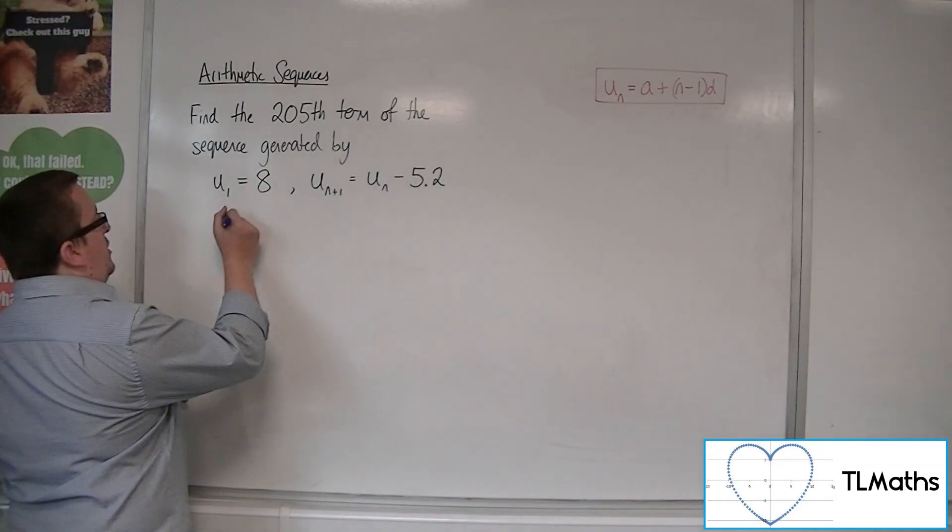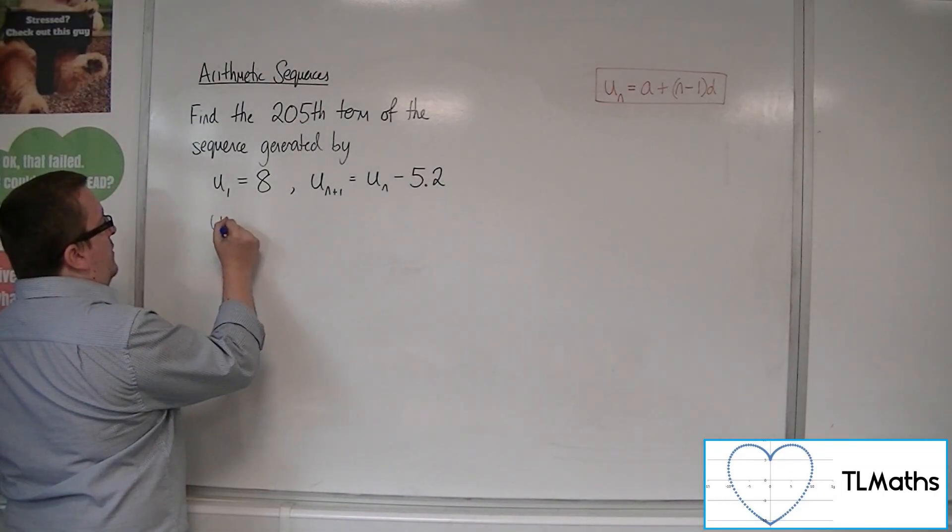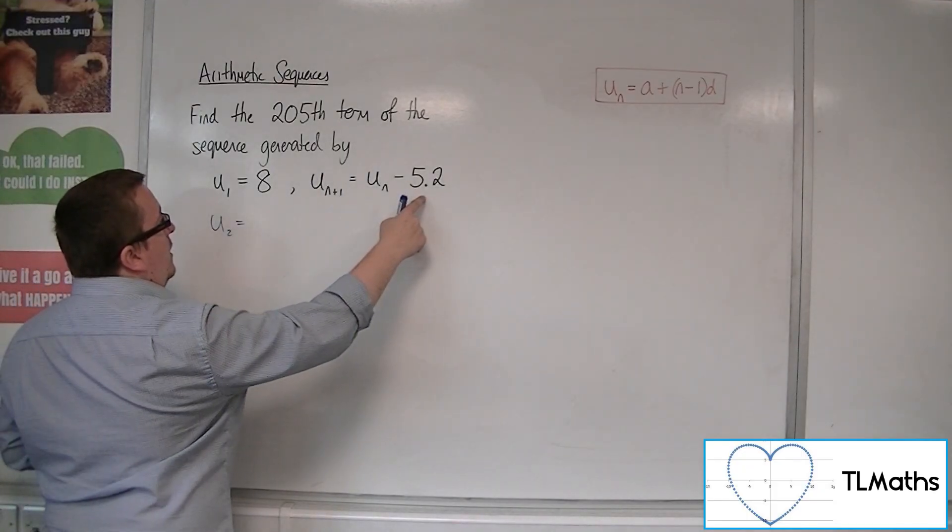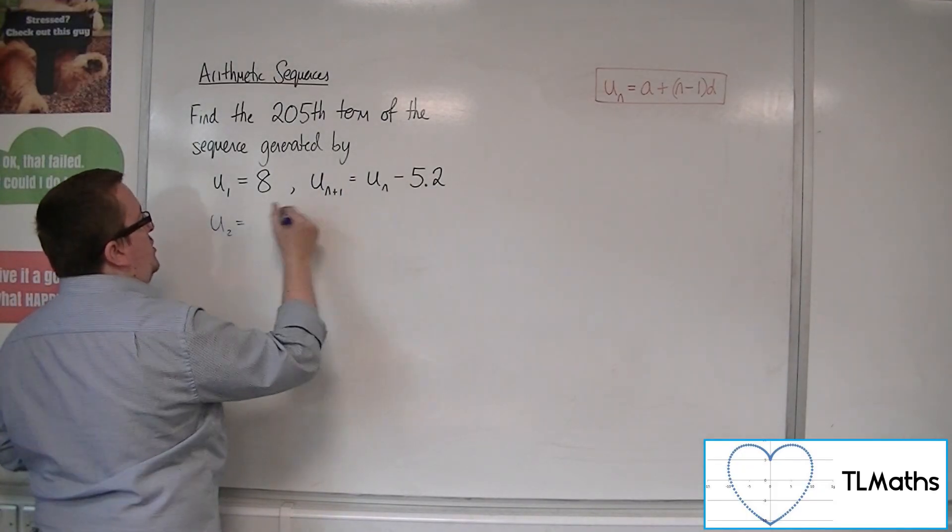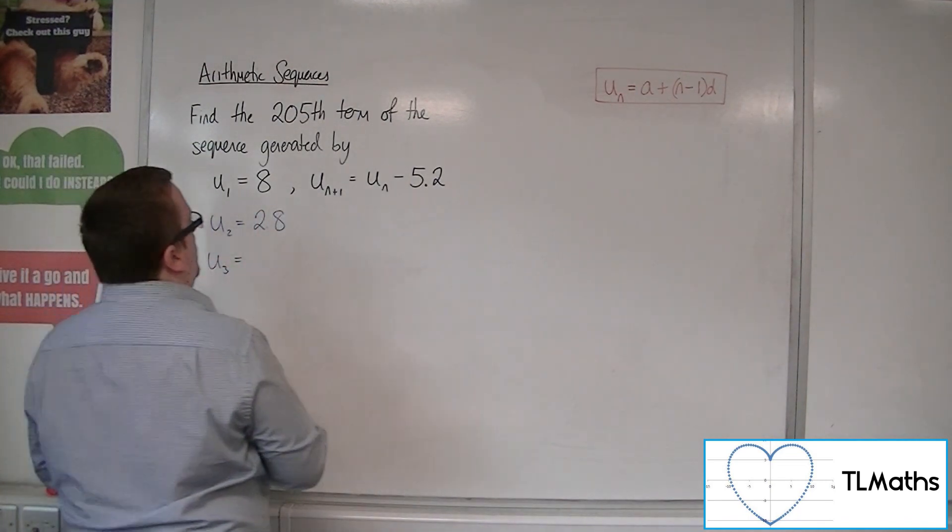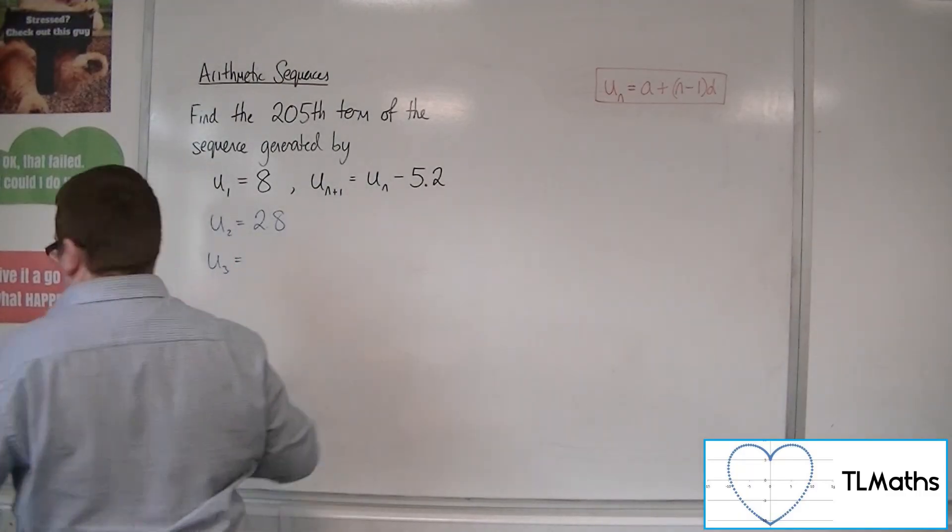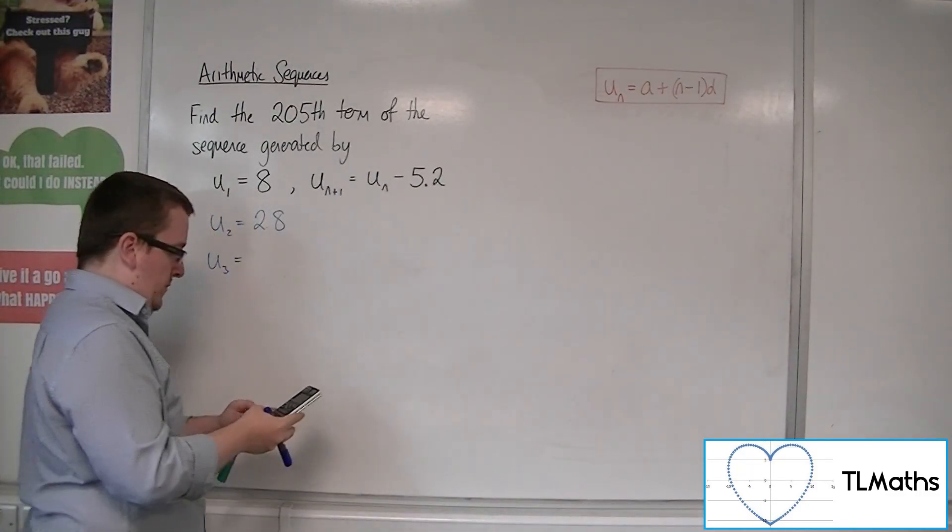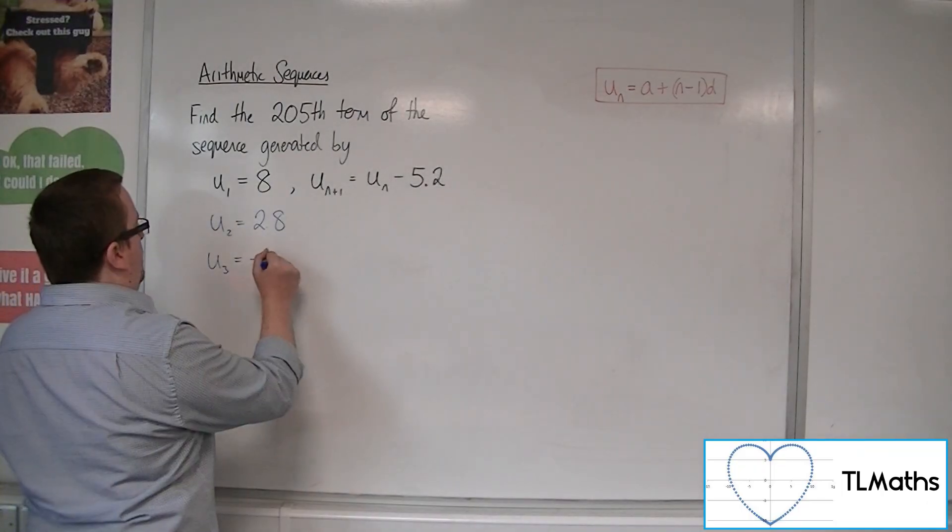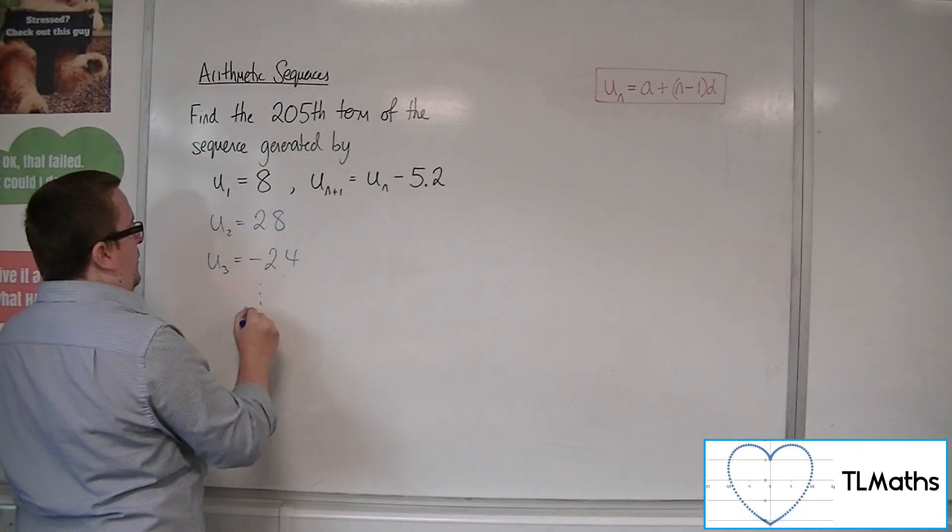So if I start off with U1 is 8, then U2 will be 8 take away 5.2, which is 2.8. And then U3 will be 2.8 take away 5.2. So 2.8 take away 5.2 is minus 2.4, and so on.